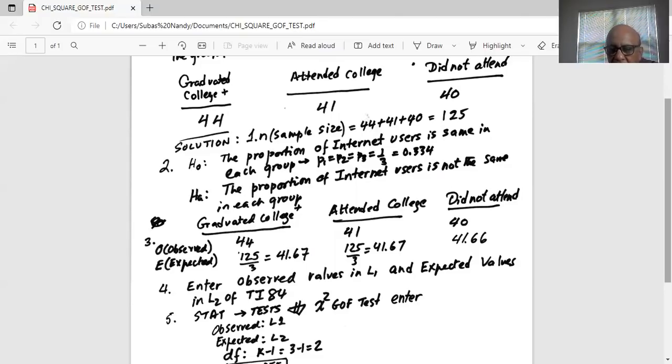The sum of this difference, observed minus expected square divided by expected, is our chi-square test statistic. Instead of calculating it by hand, we will use TI-84.